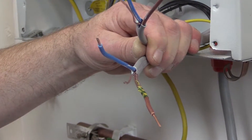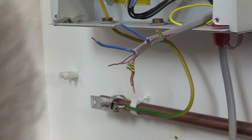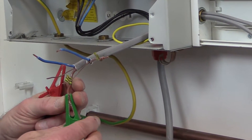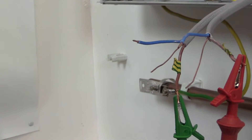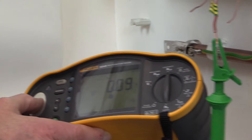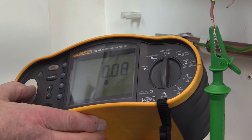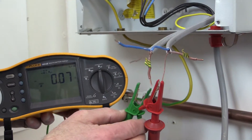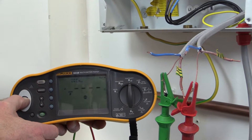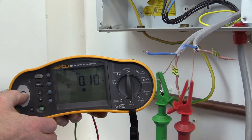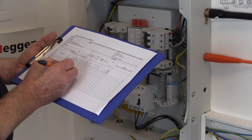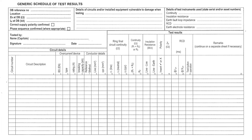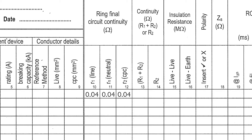In a circuit where a cable type with a reduced size CPC is used — such as where a ring final circuit is wired using PVC flat twin and earth cable — the CPC resistance will be higher than the resistance measured for the line and neutral. The value measured will be in the ratio of the line and CPC conductor size. For a 2.5 mm² conductor with a 1.5 mm² CPC, the resistance of the CPC will be approximately 1.67 times higher than that of the line conductor. The measured values of R1, Rn, and R2 should be recorded in the schedule of test results, and the inspector should remember to compensate for the resistance of the test leads as demonstrated in the previous video.